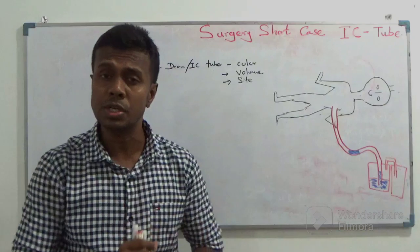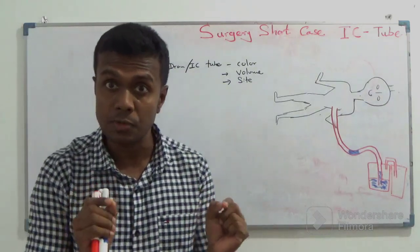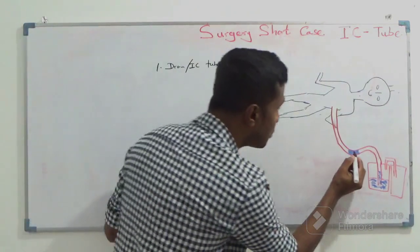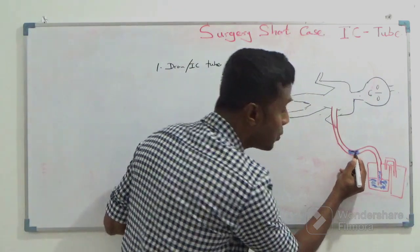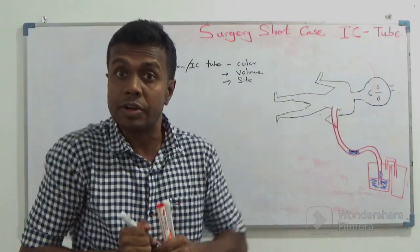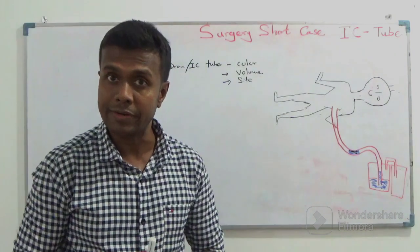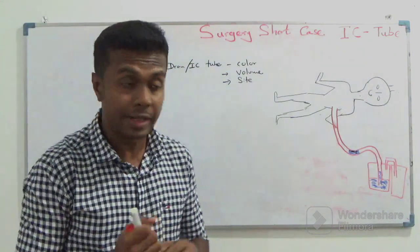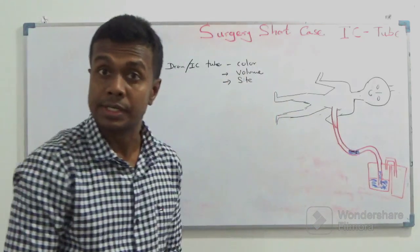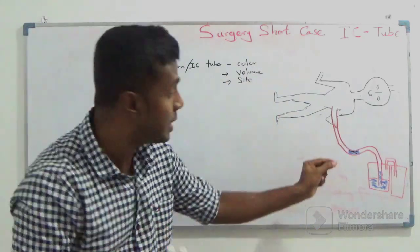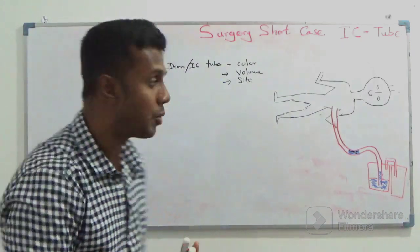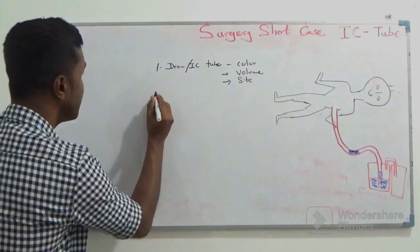Then you have to check whether the IC tube is functioning or not. For that, carefully look at the fluid column. When your patient inspires and expires, it will create negative pressure in the pleural cavity. With that, the fluid column moves up and down. Check whether this fluid column is swinging — that is number two: swinging of the fluid column.